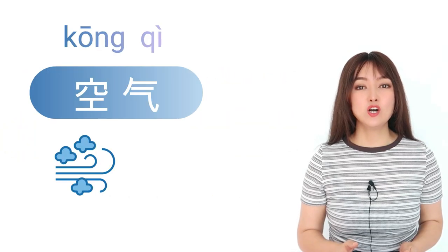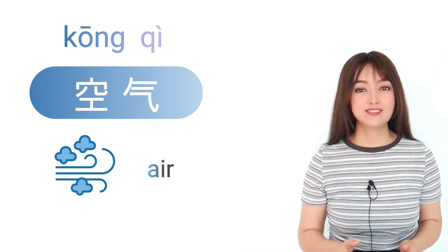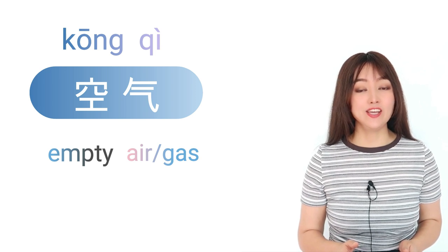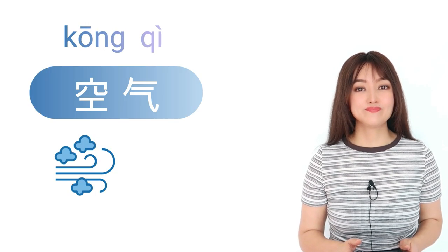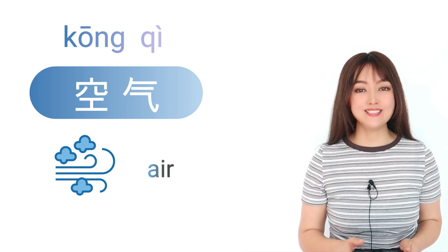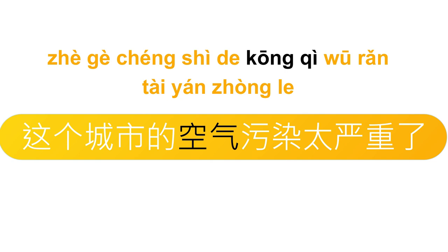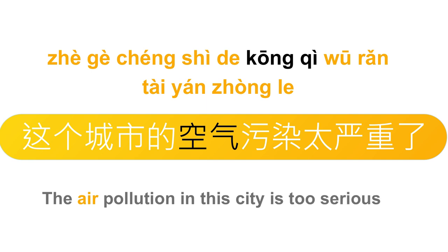好，下一个，空气，air。空的意思是 empty，气的意思是 air, gas。空气。这个城市的空气污染太严重了。The air pollution in this city is too serious. 这个城市的空气污染太严重了。